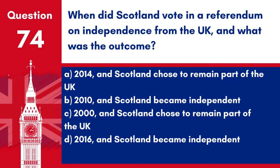Question 74. When did Scotland vote in a referendum on independence from the UK and what was the outcome? A. 2014, and Scotland chose to remain part of the UK. B. 2010, and Scotland became independent. C. 2000, and Scotland chose to remain part of the UK. D. 2016, and Scotland became independent. Answer: A. 2014, and Scotland chose to remain part of the UK. In the 2014 referendum, Scotland voted to remain part of the United Kingdom.